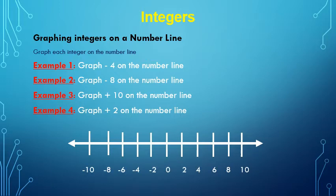Graphing integers on a number line. I want to graph each integer on the number line. Example 1: graph negative 4. Example 2: graph negative 8. Example 3: graph positive 10. Example 4: graph positive 2.